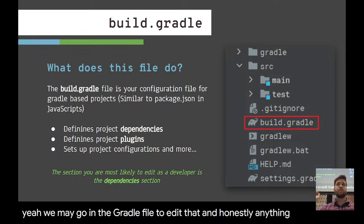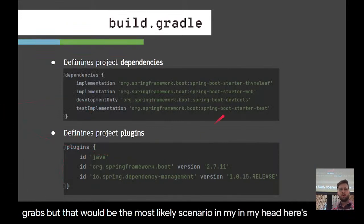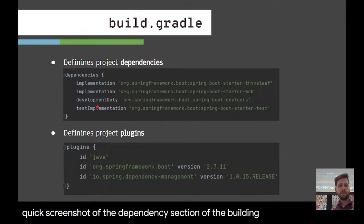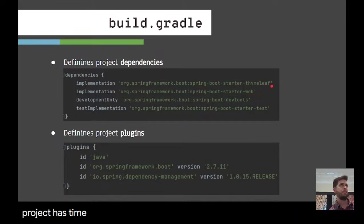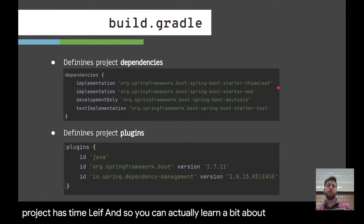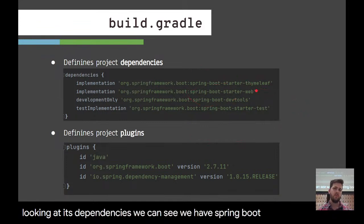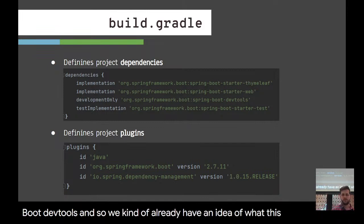If you create a project using the Spring Initializer, it pre-configures your build.gradle file. You may never interact with it, except that as the project matures and you need new things, the most likely thing you'll edit is the dependency section — adding a new dependency as your project grows. You can actually learn a bit about a project just by looking at its dependencies: Spring Boot starter web, Spring Boot dev tools, and so on.